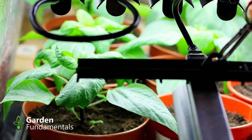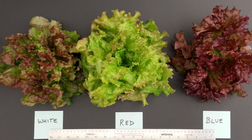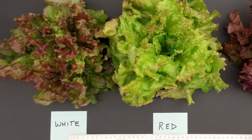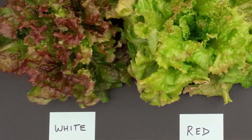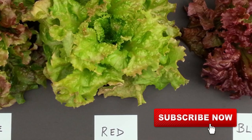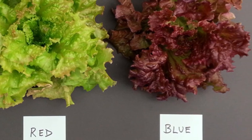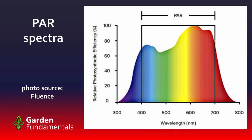Is white light the best? The sun produces white light, and plants do best when they receive all colors of the visible spectrum, so it seems reasonable to conclude that the best LEDs are white lights. The problem with this logic is that plants don't need light that looks white to us, nor do they need light that mimics the sun. Plants grow best with a light that has a lot of red and blue and smaller amounts of green and yellow. White light is not important for plants — it is better to have the right amount of each wavelength.